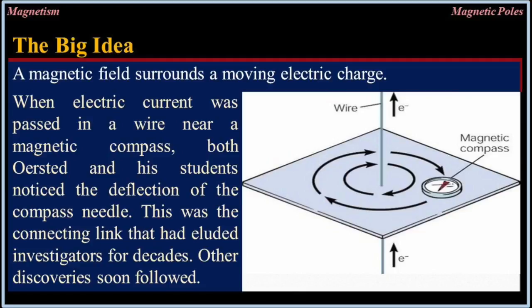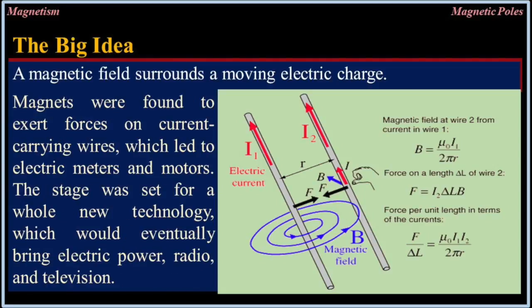Other discoveries soon followed. Magnets were found to exert force on current-carrying wires, which led to electric meters and motors. The stage was set for a whole new technology which would eventually bring electric power, radio, and television.